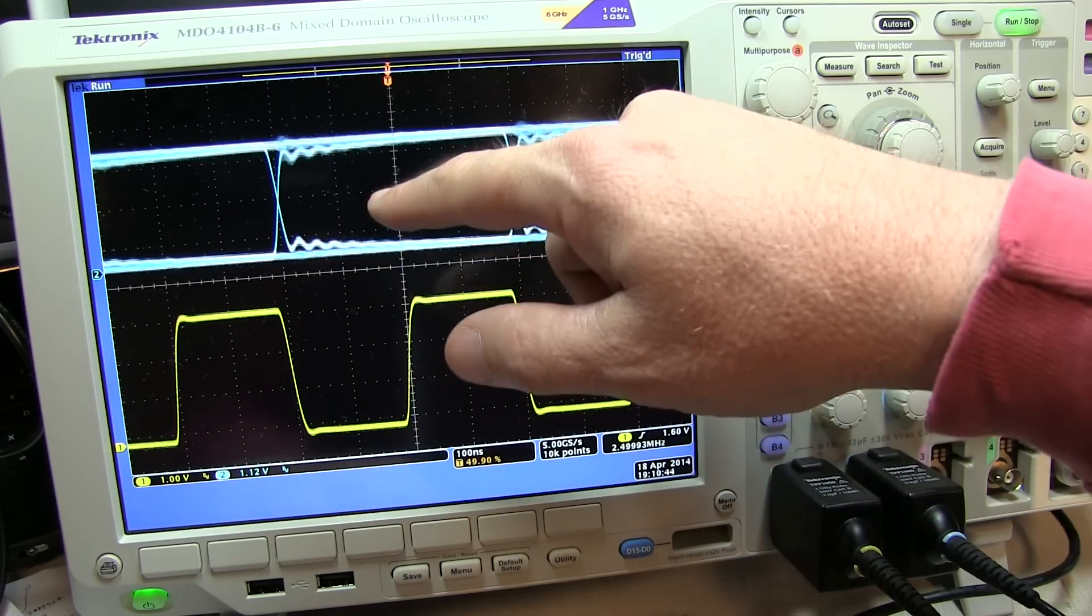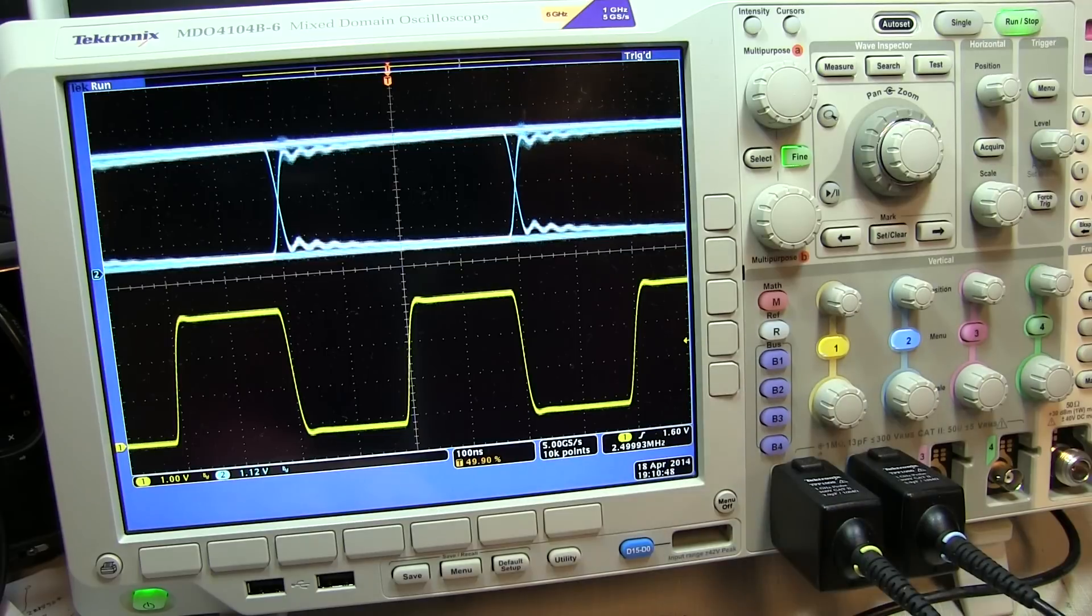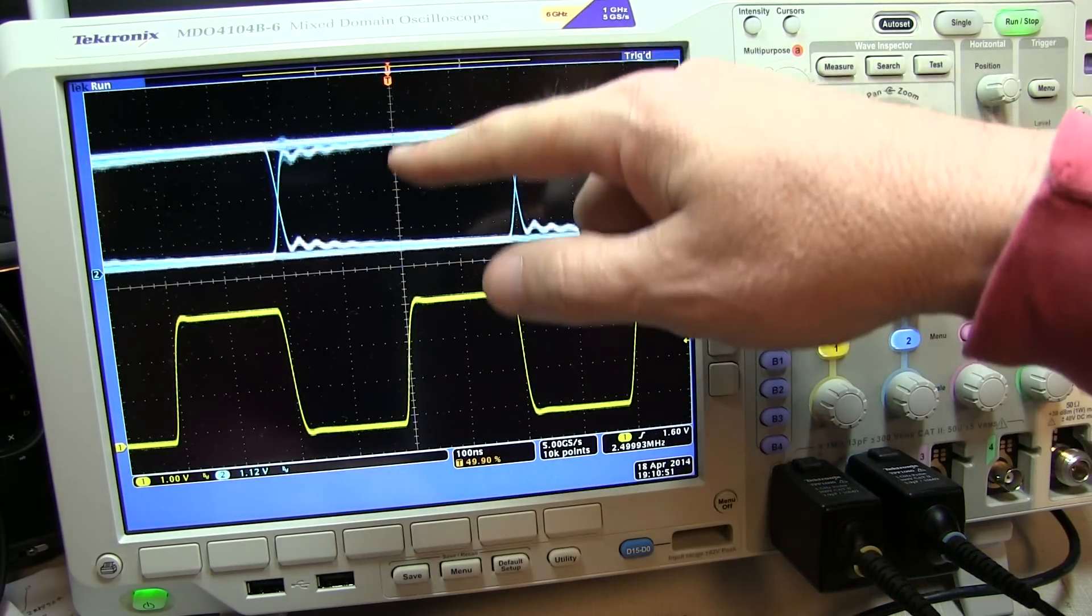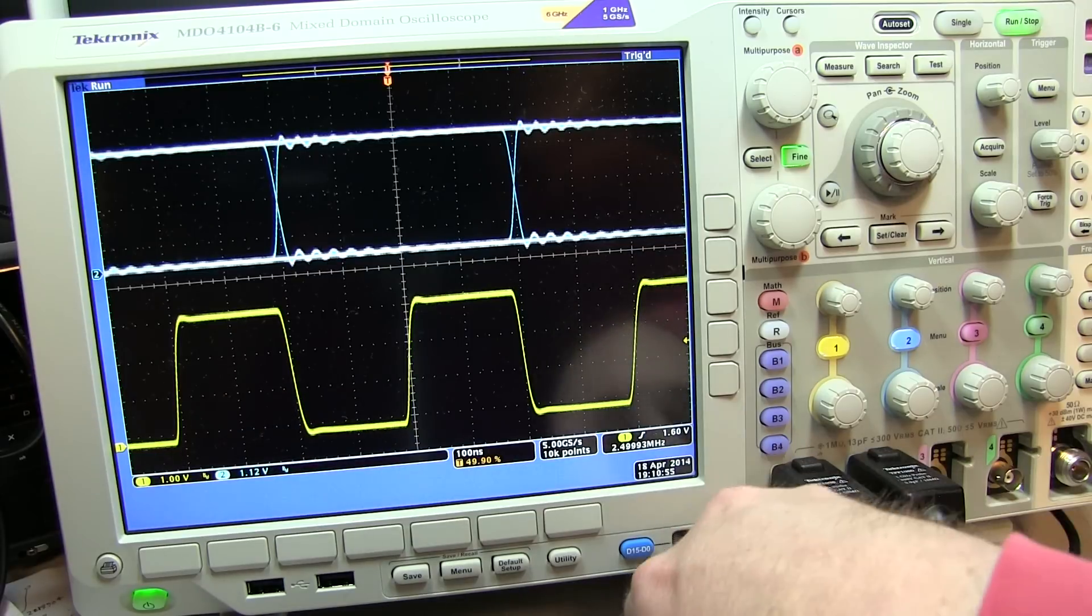So obviously then this means that I need to be careful also about where I sample that data to ensure that I've got enough voltage to properly be detected as a 1 or a 0.